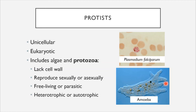On screen we can see two examples of protists. One is the amoeba, a protozoan that is usually free-living but can sometimes be parasitic. The other is Plasmodium falciparum — you can see red blood cells, one of which is infected with these fuchsia-colored Plasmodium falciparum cells. This is the protozoan parasite that causes the infectious disease malaria.